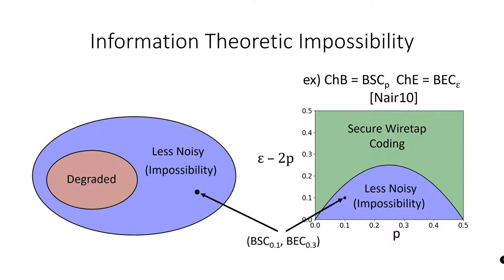To illustrate this, consider the scenario where Bob's channel is a binary symmetric channel which flips each bit with some probability p, and where Eve's channel is a binary erasure channel which erases each bit with some probability ε. In this case, the entire blue area of the graph represents the set of channels that satisfy the less noisy requirement and thus cannot be used to build a secure wiretap coding scheme in the information-theoretic setting, but that are not degraded with respect to each other.